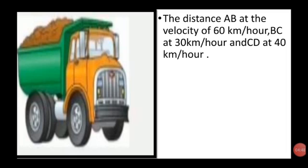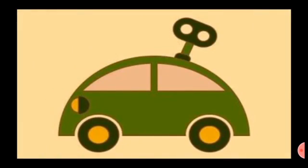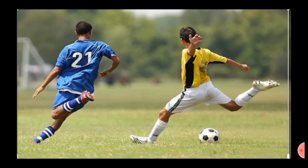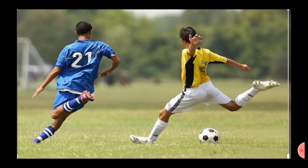The truck driver increases or decreases the velocity of the truck by means of the accelerator. Consider a toy car that runs on a clockwork spring: when released on a flat floor it goes in a straight line, but when hit on one side it changes direction, and if it collides into a wall it stops — its velocity changes. On a football ground, a player changes the direction of a ball by kicking it, changing its velocity. This interaction that brings about the acceleration is called force.